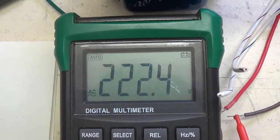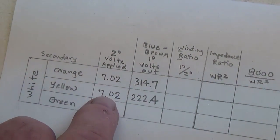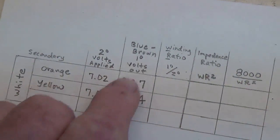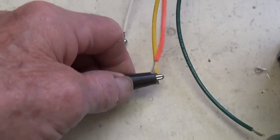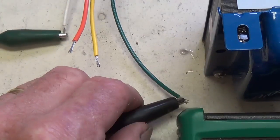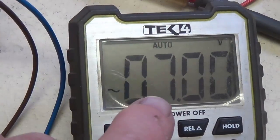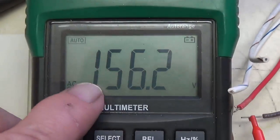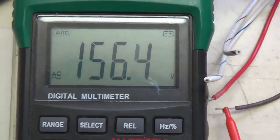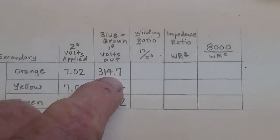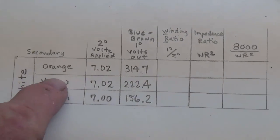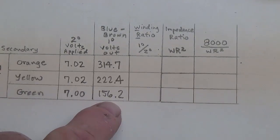Now we disconnect from inputting between the white and orange wire and let's hook up the white and yellow wires. So now I'm injecting my 7.02 volts into the white and yellow wires. I'm going to write 7.02 here. And what's our output? 222.4 volts. White to yellow wires, 7.02 volts injected. Output between the blue and brown wires of the primary of the output transformer is 222.4 volts. So far so good. Now we'll disconnect from the yellow wire and let's connect to the green wire. Now we're injecting 7.00 volts into the white and green wires and getting out 156.2 volts.